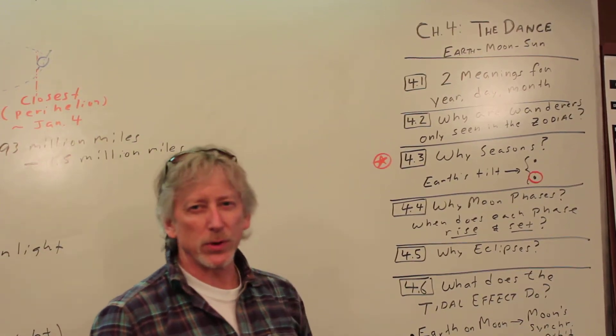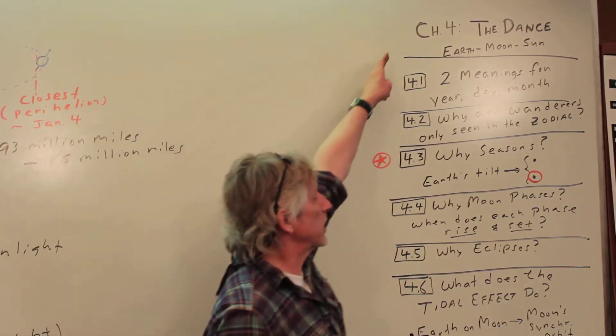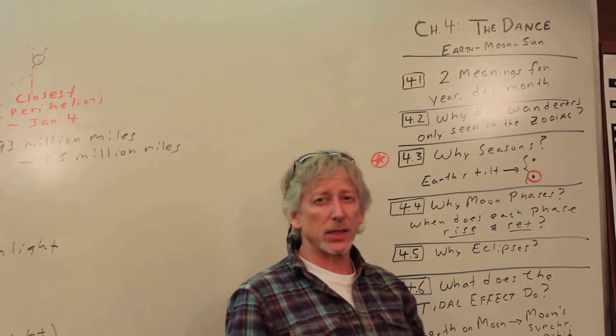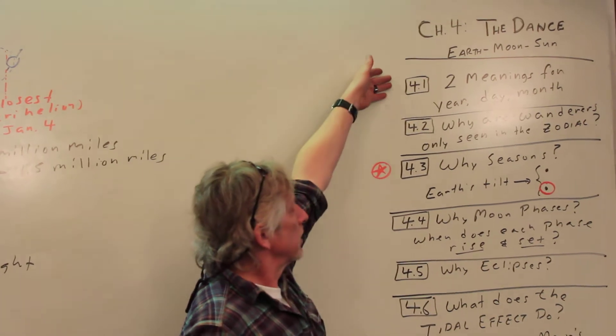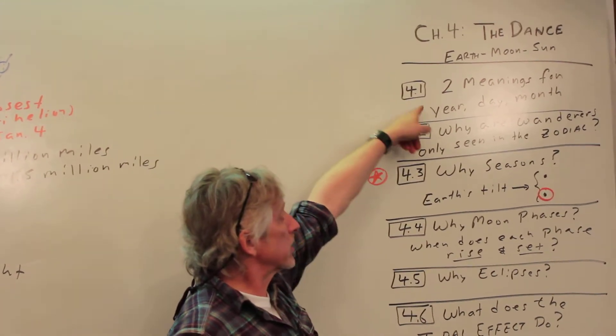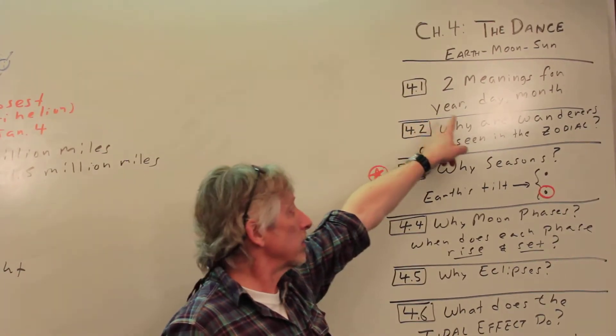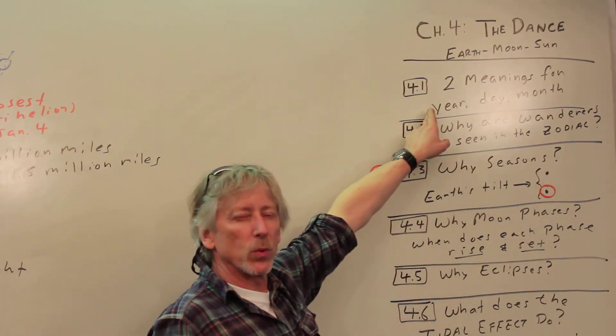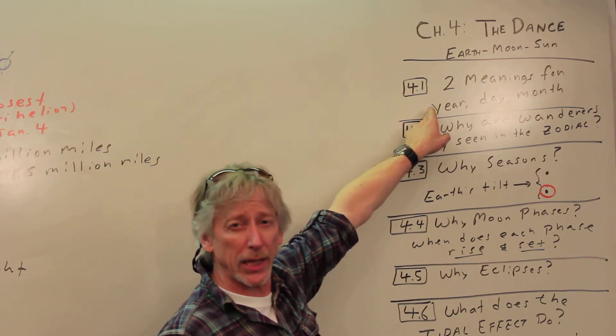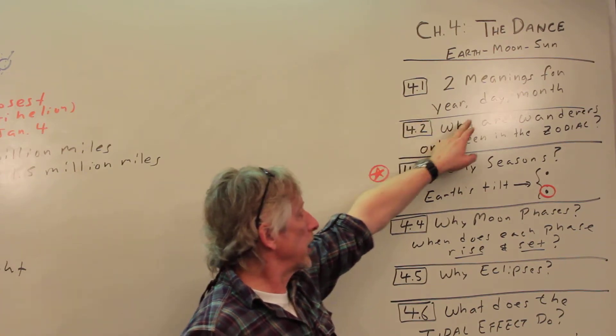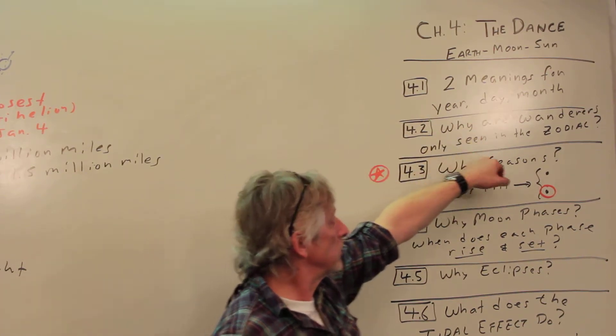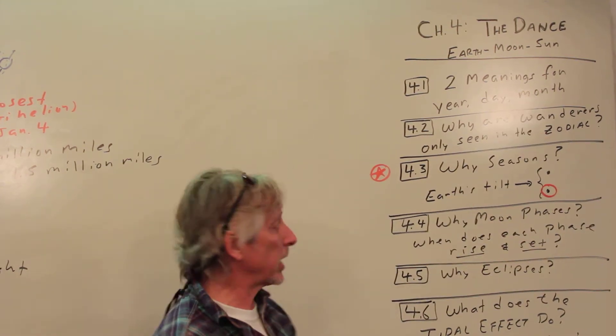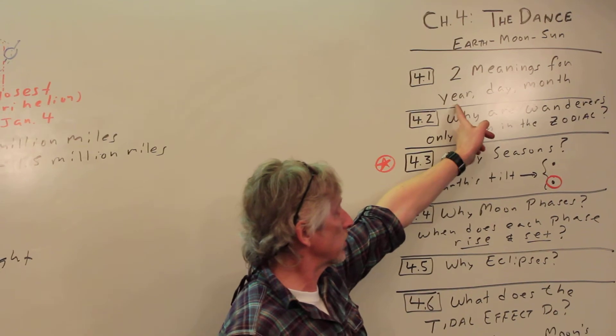Okay, continuing on with chapter four, we're doing the dance, the Earth-Moon-Sun dance. Section 4.1 is two meanings for a year, two meanings for day, two meanings for a month. There's what we see and use, like a calendar and solar day and the lunar phase, and then there's what's actually happening: once around Earth going around Sun, Earth spinning once, Moon orbiting Earth once.